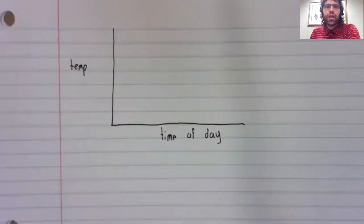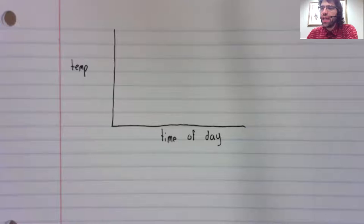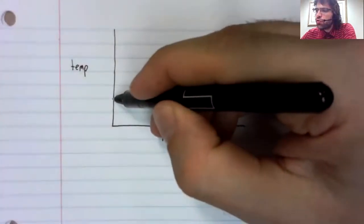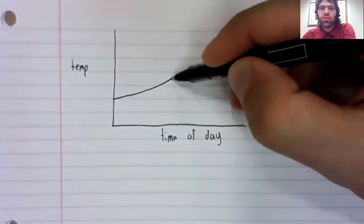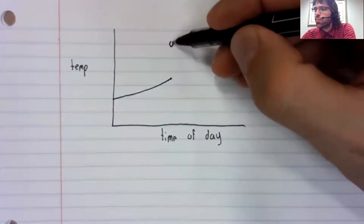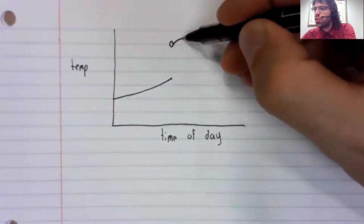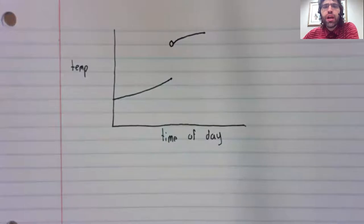Say that I'm graphing the temperature versus the time of day. And I gave you a graph that looks like this, it's going up. And then suddenly, the temperature is up here.